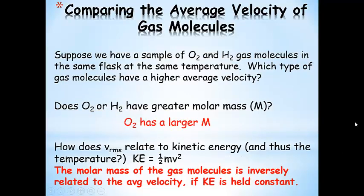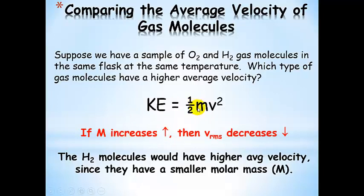Oxygen has a larger molar mass; hydrogen has a smaller molar mass. Since kinetic energy must be the same for both, as mass increases, velocity has to decrease. If we increase the molar mass of the gas molecules, the average velocity has to go down. Heavier things move slower at the same kinetic energy. So the hydrogen molecules have a higher average velocity, since they have a smaller molar mass and both gases are at the same average kinetic energy.